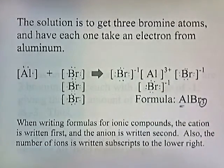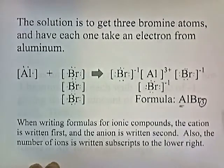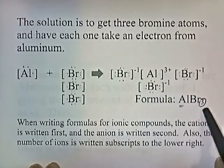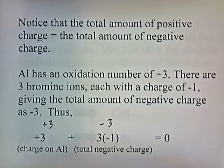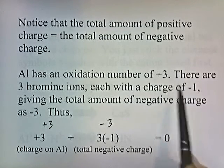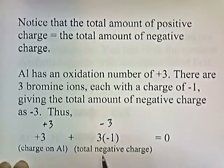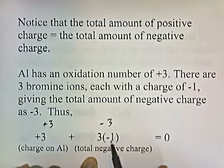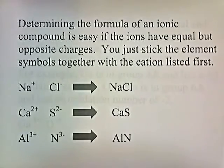The total negative charge from the three bromines is negative three. When writing formulas for ionic compounds, the cation (positive ion) is written first, so aluminum is written first, then bromine. The number of ions is written as subscripts on the lower right, so three bromines gives us AlBr3. The total positive charge (plus three) equals the total negative charge (three bromines × −1 = −3), giving a net charge of zero.